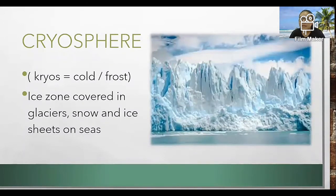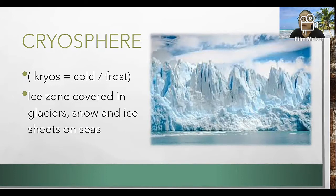Cryosphere is the ice. You can normally find that in the South Pole or North Pole. It's the ice zone covered in glaciers, snow, and ice sheets on the sea.